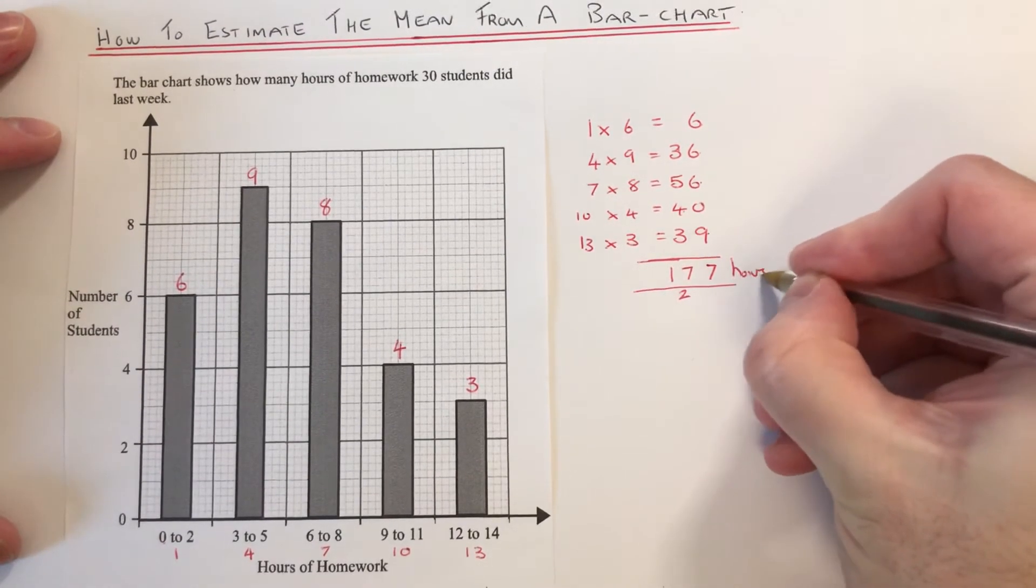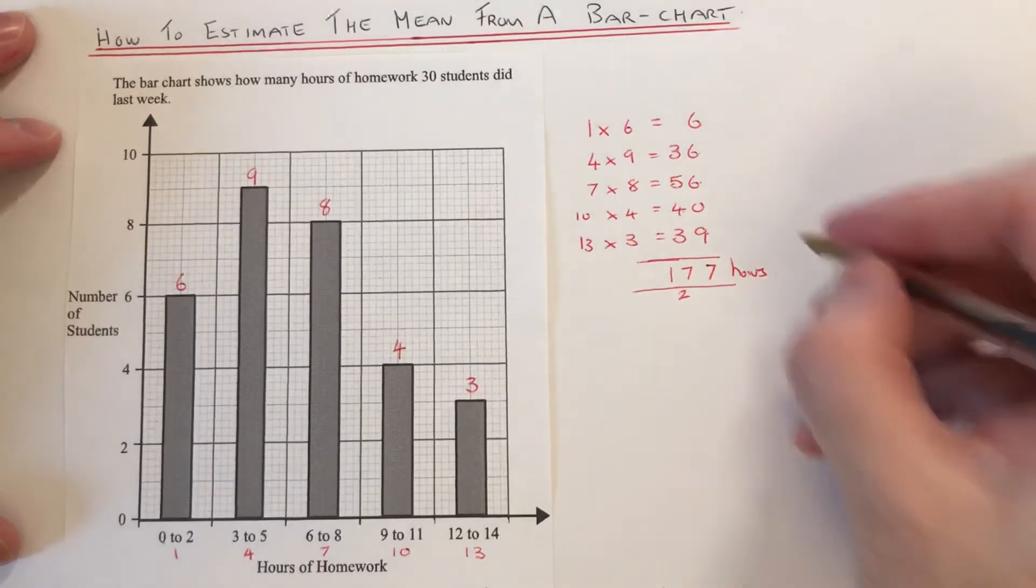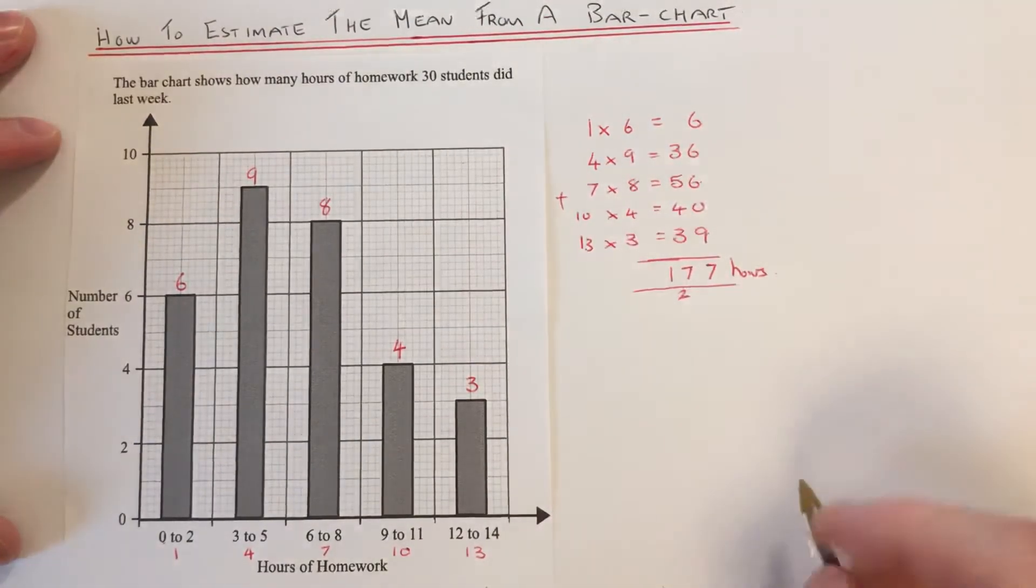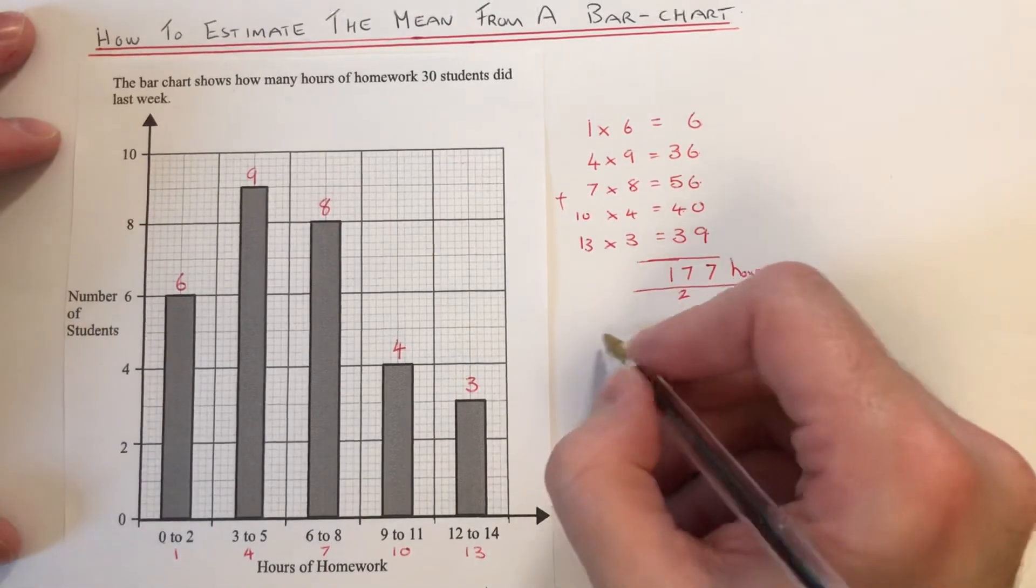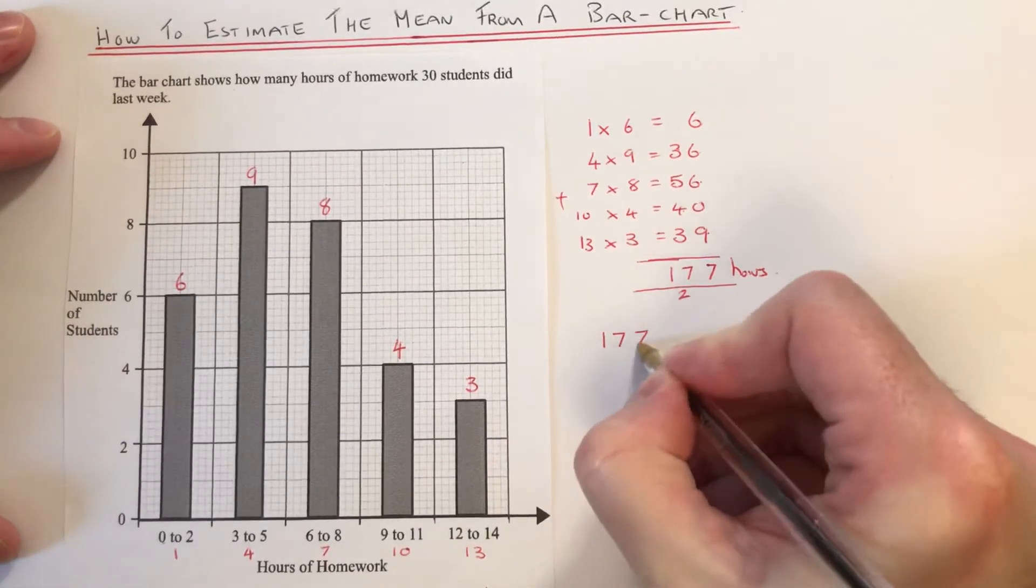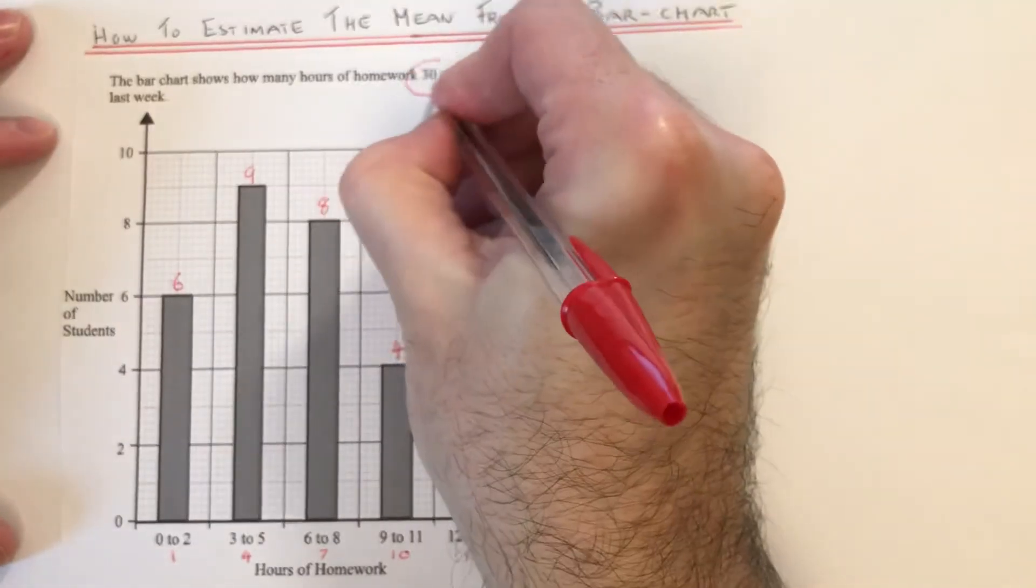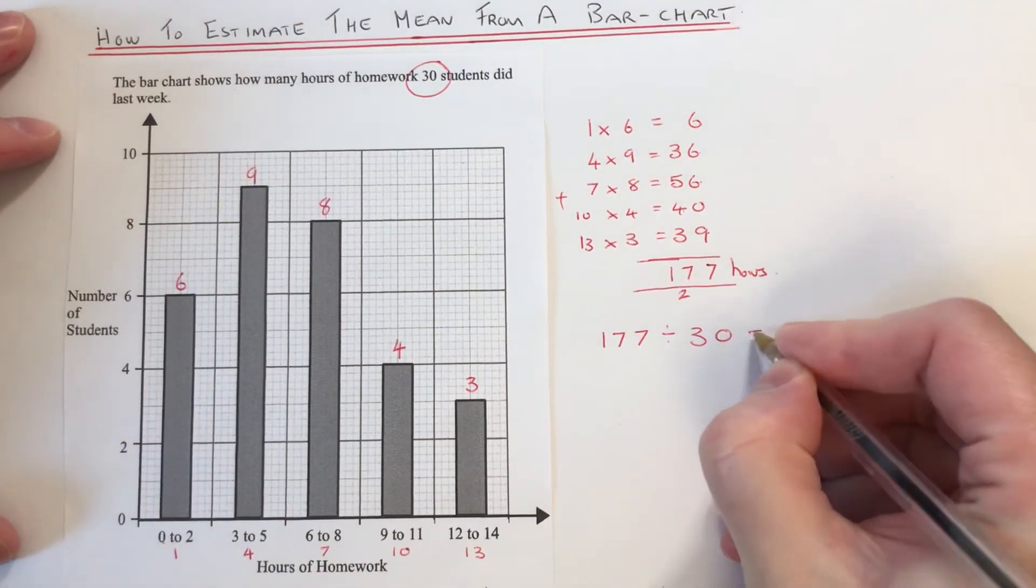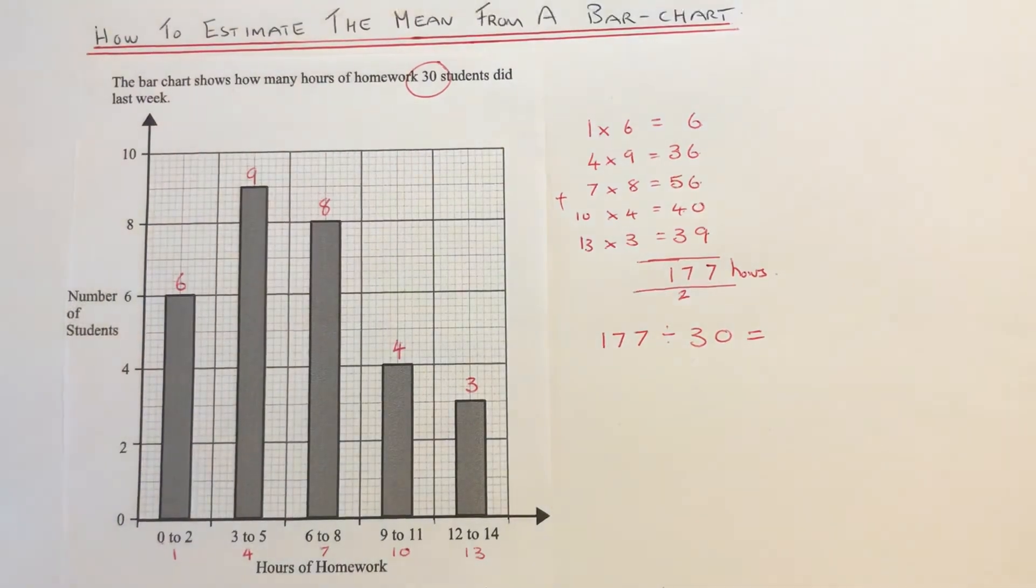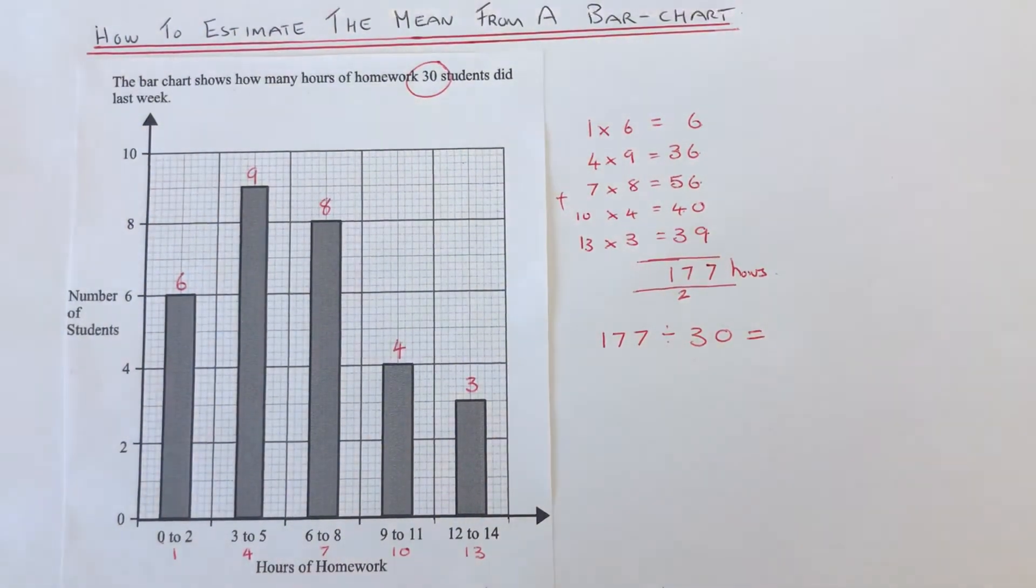So that's the amount of hours of homework all 30 students did. We just need to now divide that by the total frequency. The total frequency was given in the question - we had 30 students. So you need a calculator now to work that final bit out.